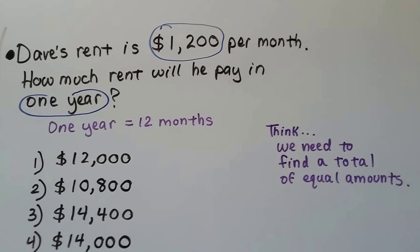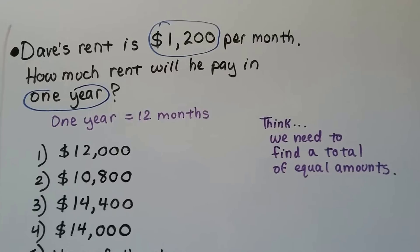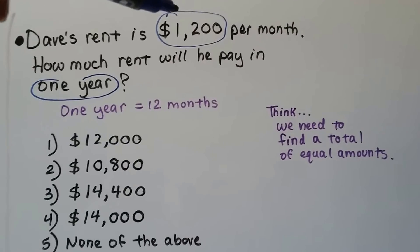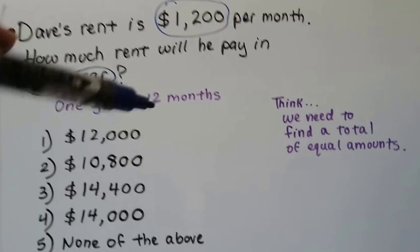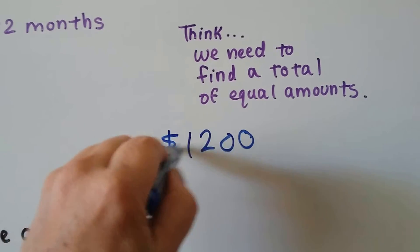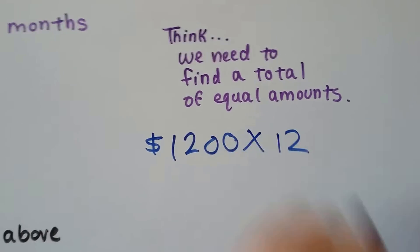So we need to think that's 12 months. They're not just going to give it to you every single time. If he's paying $1,200 per month for a year, we need to do $1,200 times the 12 months.